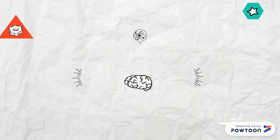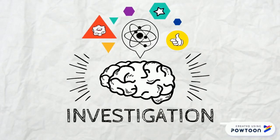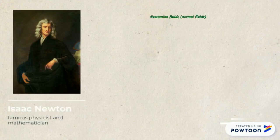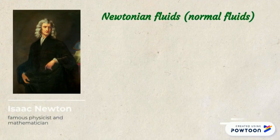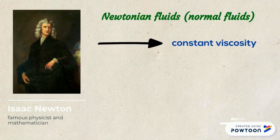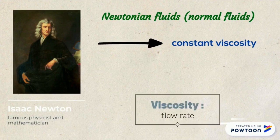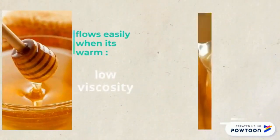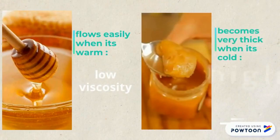Let me explain this concept to you. We all know Sir Isaac Newton — he is famous for developing many scientific theories. Newton described how normal fluids, or Newtonian fluids, behave. He observed that they have a constant viscosity, or flow rate, which can be changed only by applying heat. For example, honey flows easily when you warm it, but becomes very thick when it gets cold.